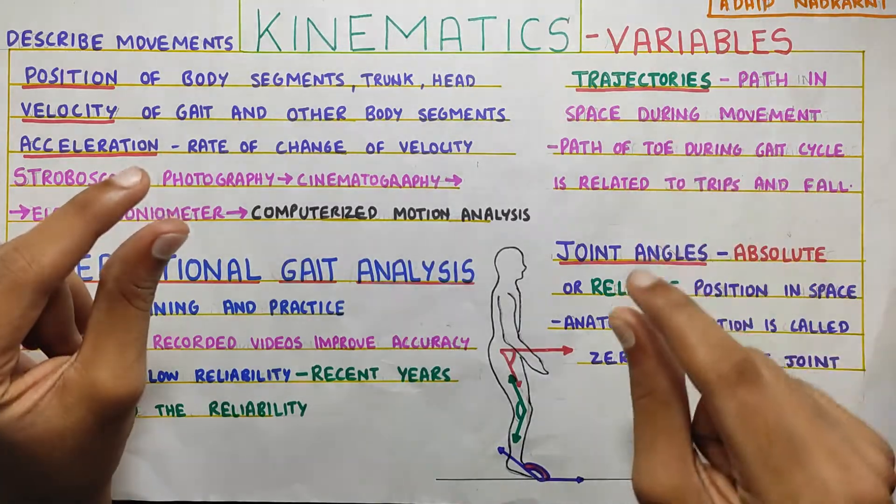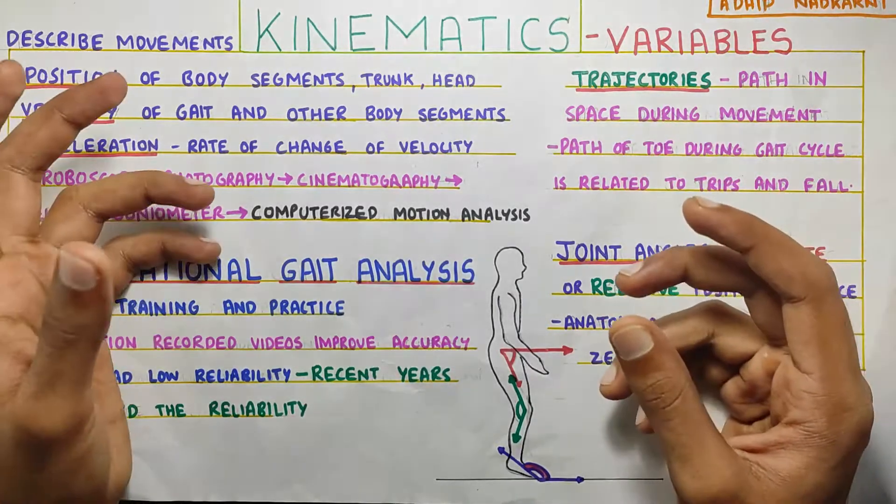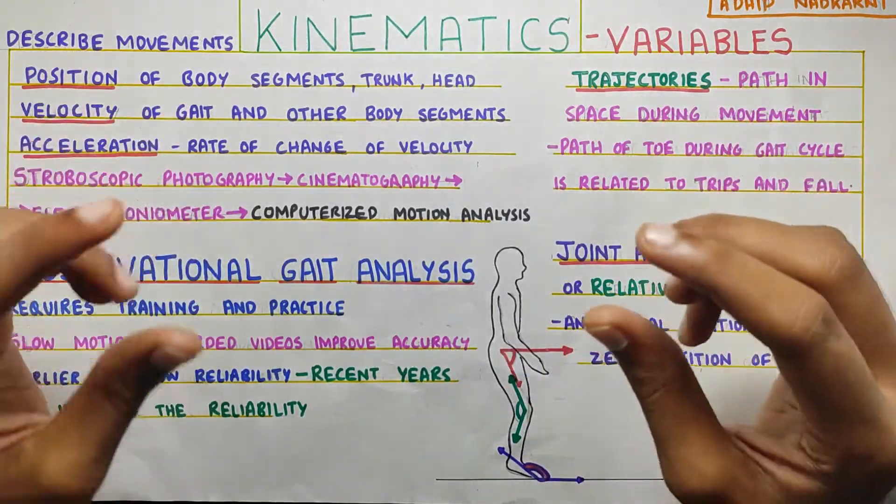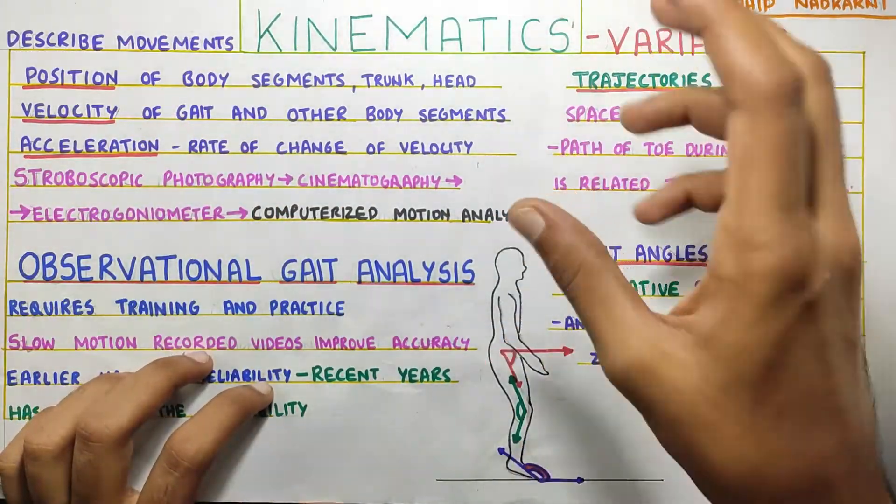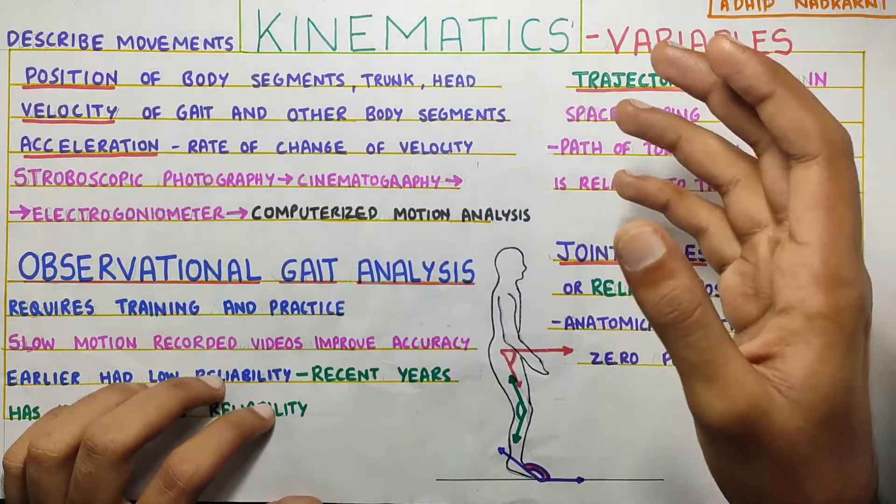Or if you track the ASIS of both the sides or PSIS. If the ASIS on one side is dropping, that means the abductors in the region are weak, because they are not able to stabilize the pelvis when you are walking. So this is why the trajectory is important.